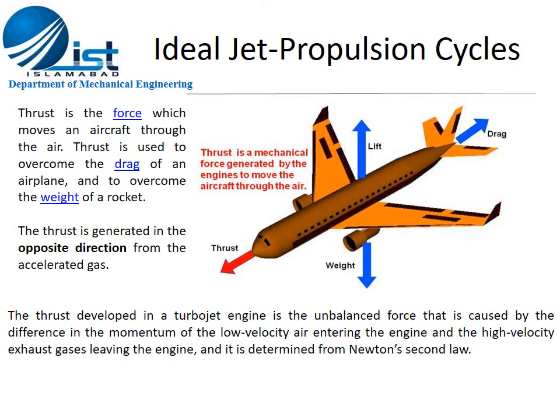Thrust is always generated in the opposite direction from the accelerated gases. On an aircraft, the forces acting are thrust, lift, weight, and drag. The thrust developed in a turbojet engine is the unbalanced force caused by the difference in momentum between the low-velocity air entering the engine and the high-velocity exhaust gases leaving the engine, and it is determined from Newton's second law.